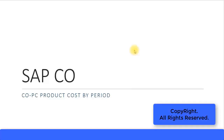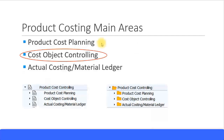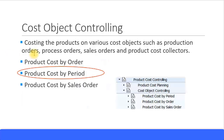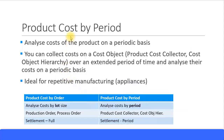In this presentation we look at product cost by period. We are in the product costing area of cost object controlling. In cost object controlling there are three categories: product cost by order, product cost by period, and product cost by sales order. We recently covered product cost by order and in this presentation we'll continue to look at product cost by period.